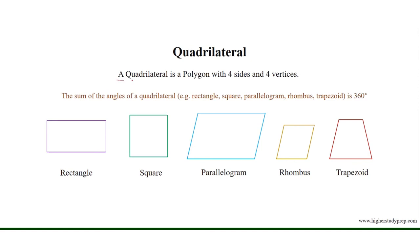A quadrilateral is a polygon with 4 sides and 4 vertices. For example: rectangle, square, parallelogram, rhombus, and trapezoid.